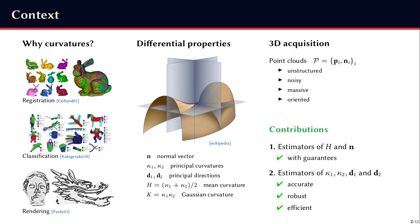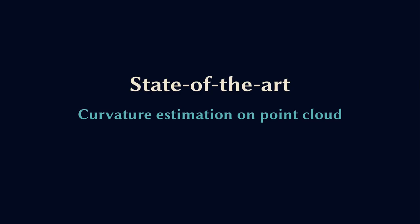So we first propose estimators for the mean curvature and the normal vector that come with theoretical guarantees, and then we propose a new estimator of the shape operator of the point sample surface, giving access to principal curvatures and their directions, that we show to be accurate, robust, and efficient to compute.